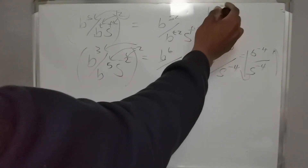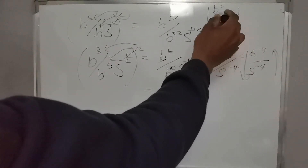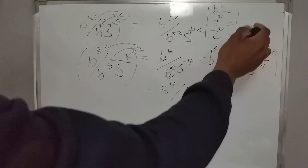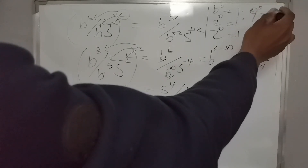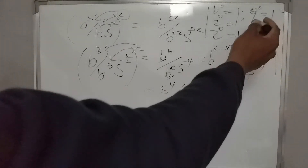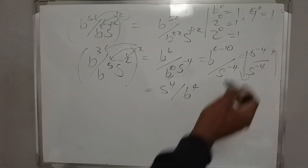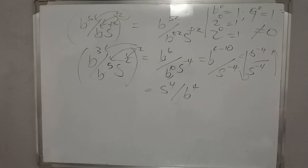Any base that is raised to 0 is equal to 1. For example, 2 raised to 0 equals 1, z raised to 0 equals 1, 9 raised to 0 equals 1. Any base raised to 0 is always equal to 1 — it's never equal to 0.